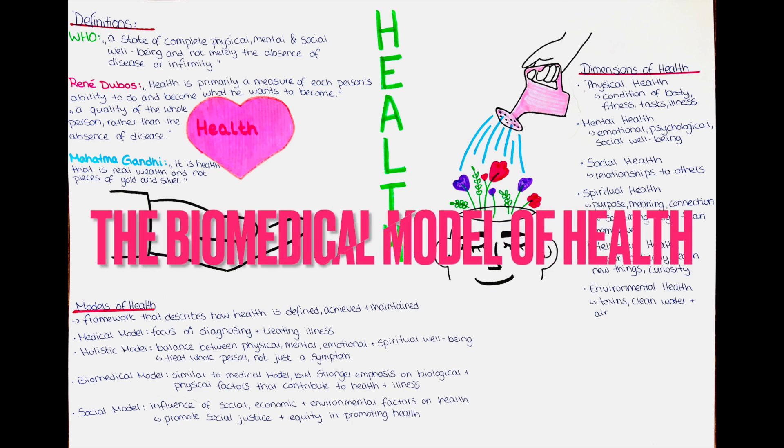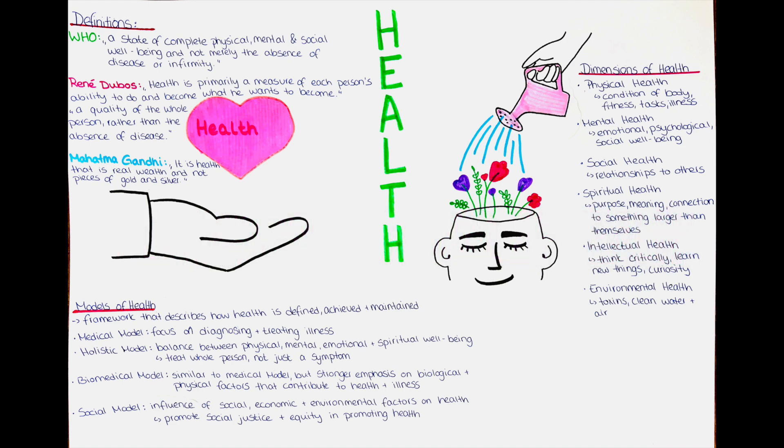The biomedical model of health is similar to the medical model, but it places a stronger emphasis on the biological and physical factors that contribute to health and illness. It views health as the absence of disease or illness and focuses on the diagnosis and treatment of specific medical conditions. The biomedical model also places a strong emphasis on medical interventions, such as medications and surgery, in treating illness and restoring health.